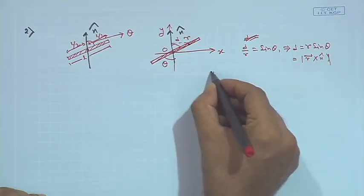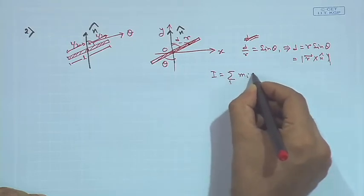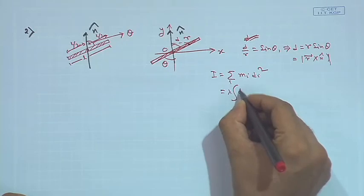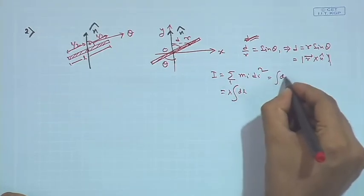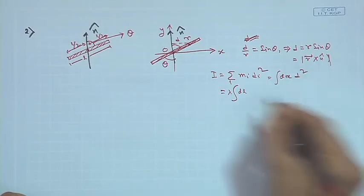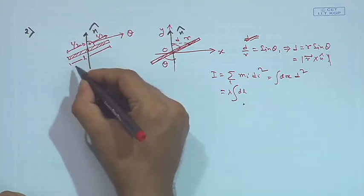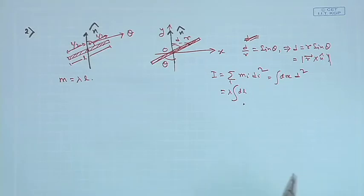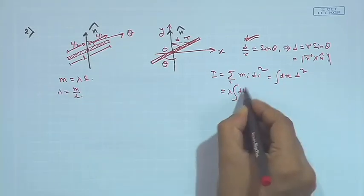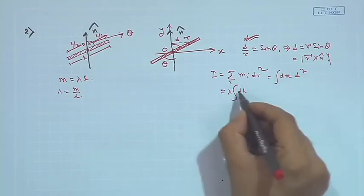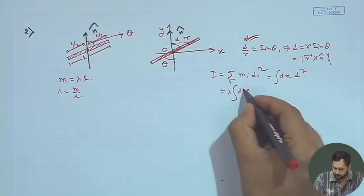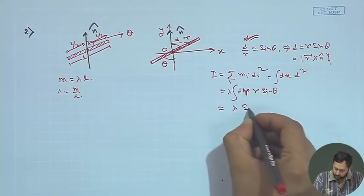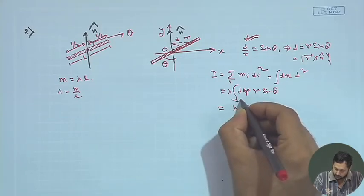The moment of inertia according to the standard formula is Σ m_i d_i², which in integral notation is ∫ dm d². We write dm = λ dr, where λ is the mass per unit length of the rod. The total mass m equals λL, so λ = m/L. Since d = r sin θ and sin θ is a constant, the integration runs from −L/2 to L/2.